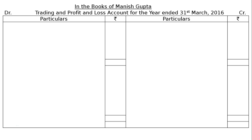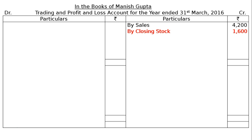We have to draw in the books of Manish Gupta the trading and profit and loss account for the year ended 31st March 2016. After drawing the format, you start with the credit side: by sales Rs. 4200, then by closing stock Rs. 1600. Closing stock is shown on the credit side of the trading account as well as as a current asset in the balance sheet. All adjustments are supposed to be written twice in the answer sheet.